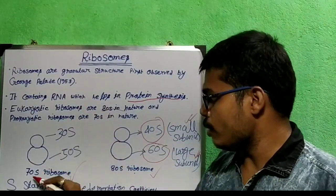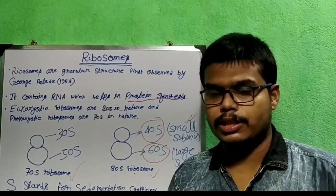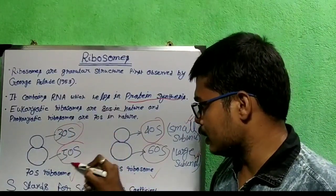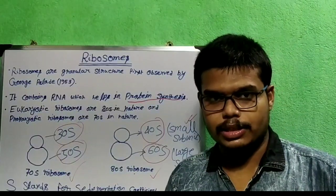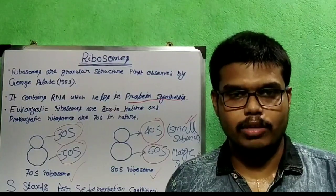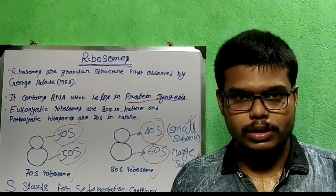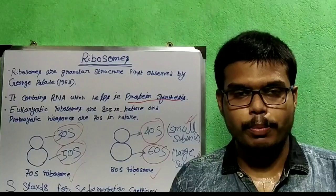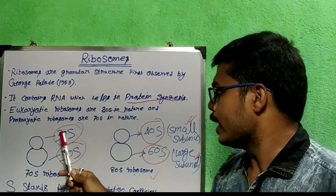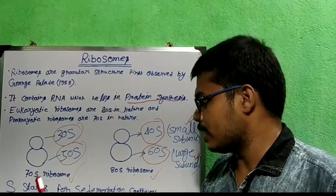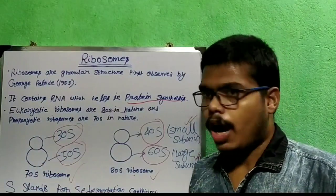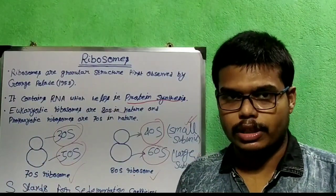For prokaryotic ribosome, it is 70S. The smaller subunit is 30S and the larger subunit is 50S. This 'S' stands for sedimentation coefficient. When we want to centrifuge a cellular component and set the sedimentation coefficient to 70S, we will find the total 70S ribosome after centrifugation.